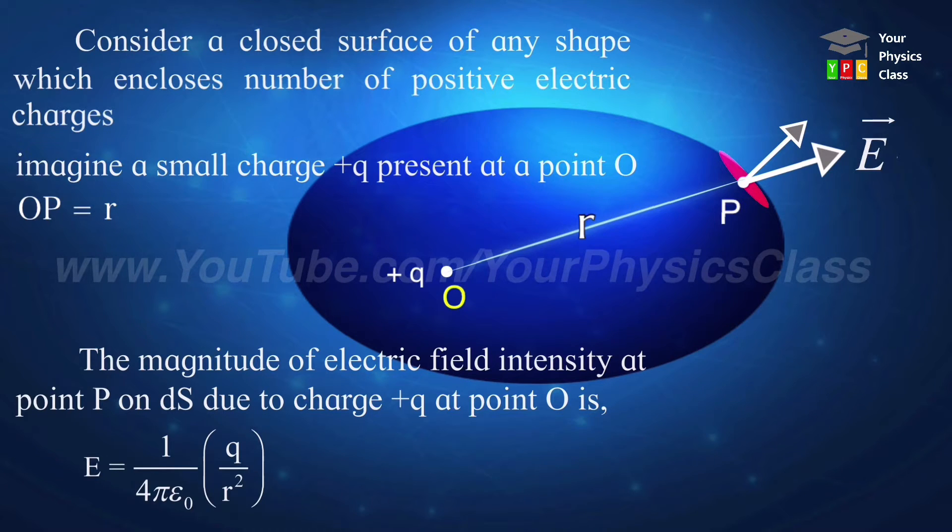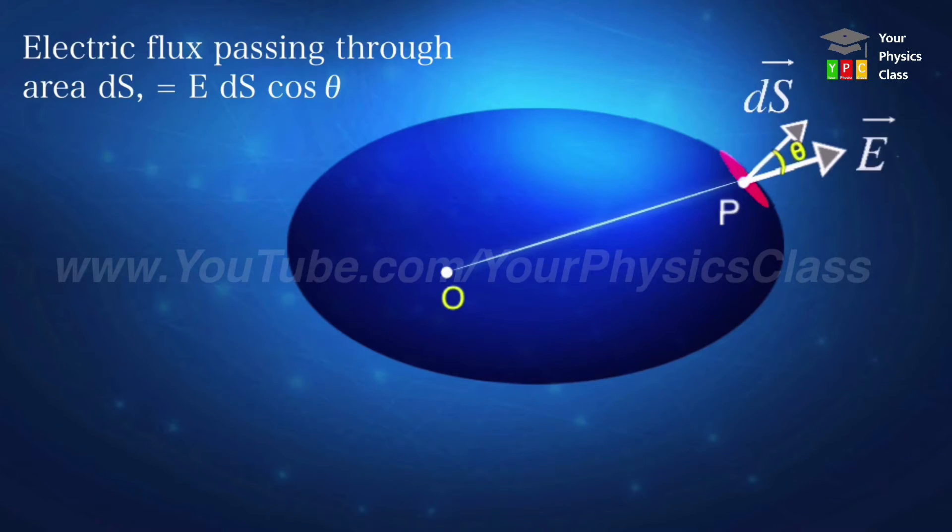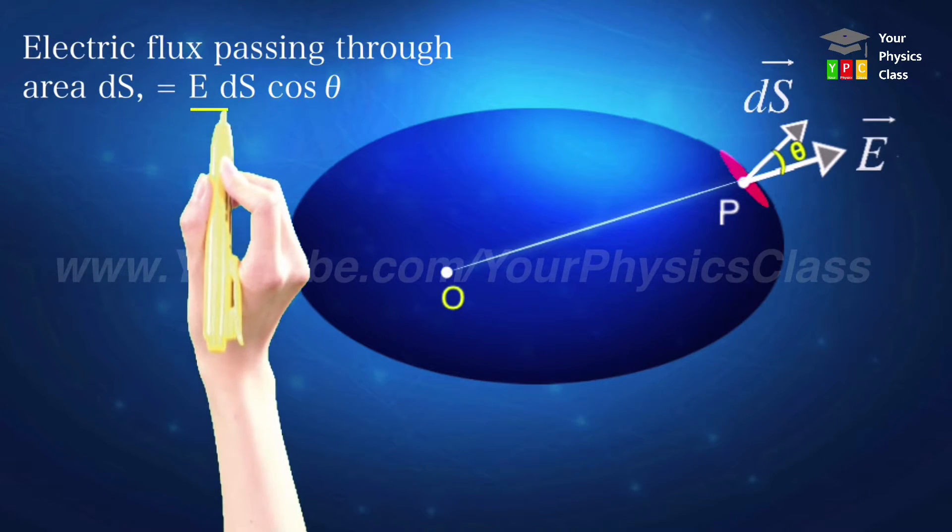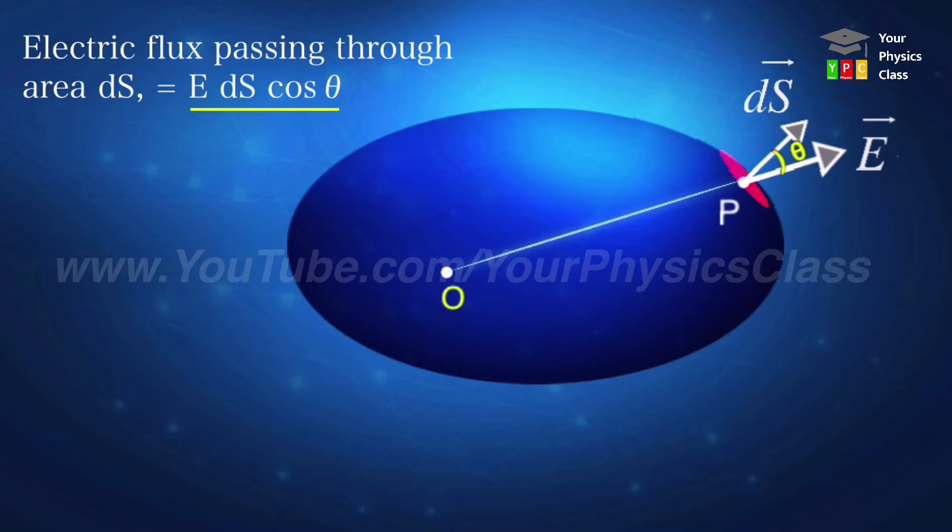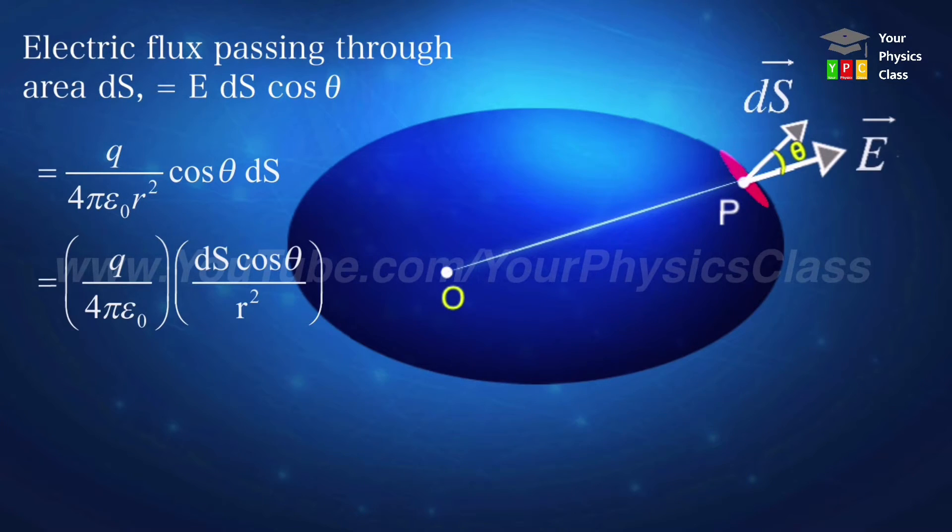Let theta be the angle between area vector dS and electric field intensity E. So electric flux passing through area vector dS is given by E dS cos theta. Now I need to substitute the value of electric field intensity here. And see, now this equation becomes q times four pi epsilon zero dS cos theta upon r square. dS cos theta upon r square means solid angle subtended by area dS at point O, which we show as d-omega.